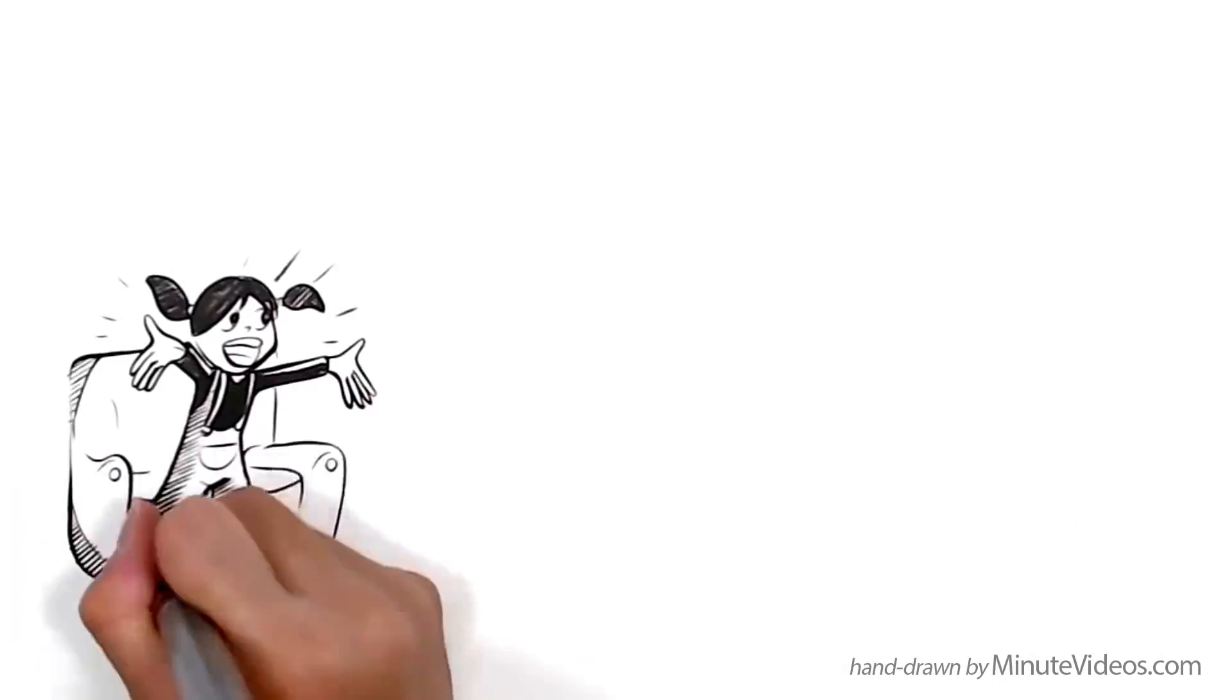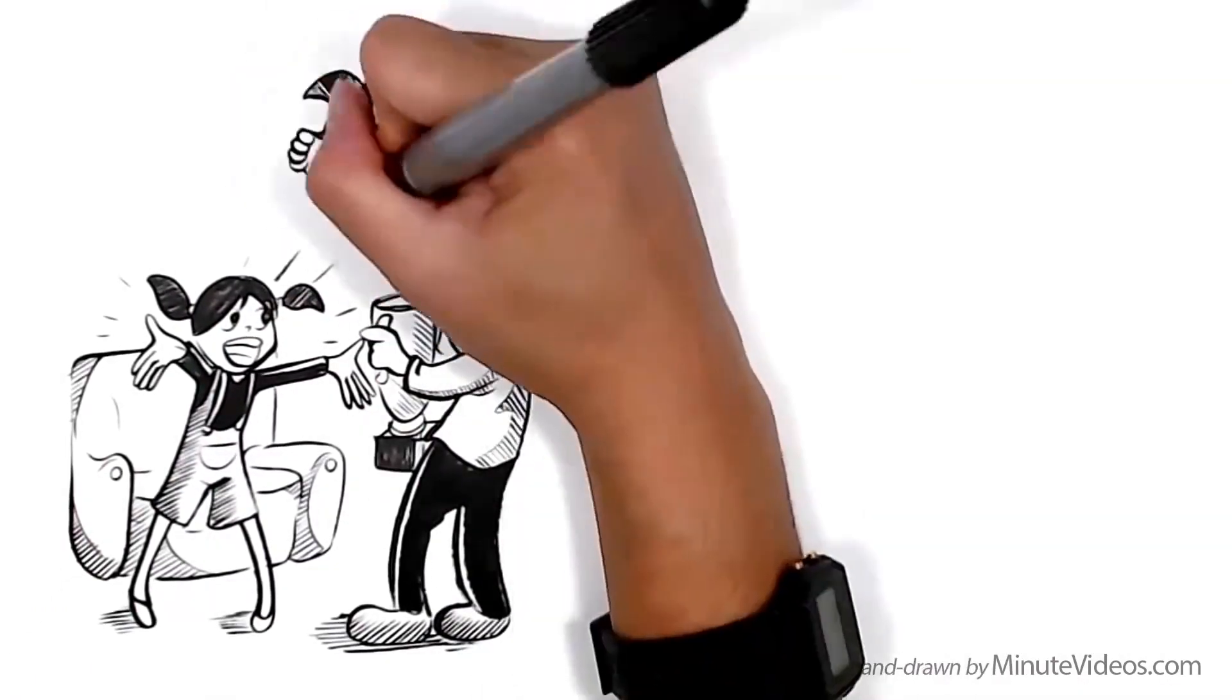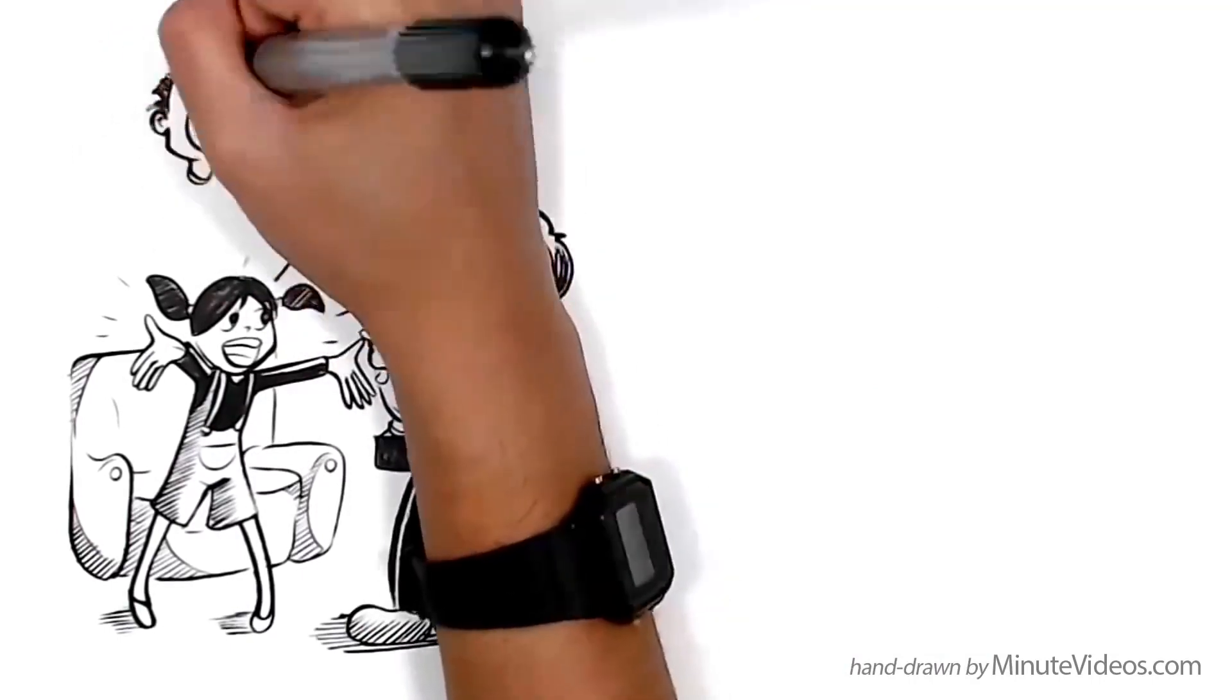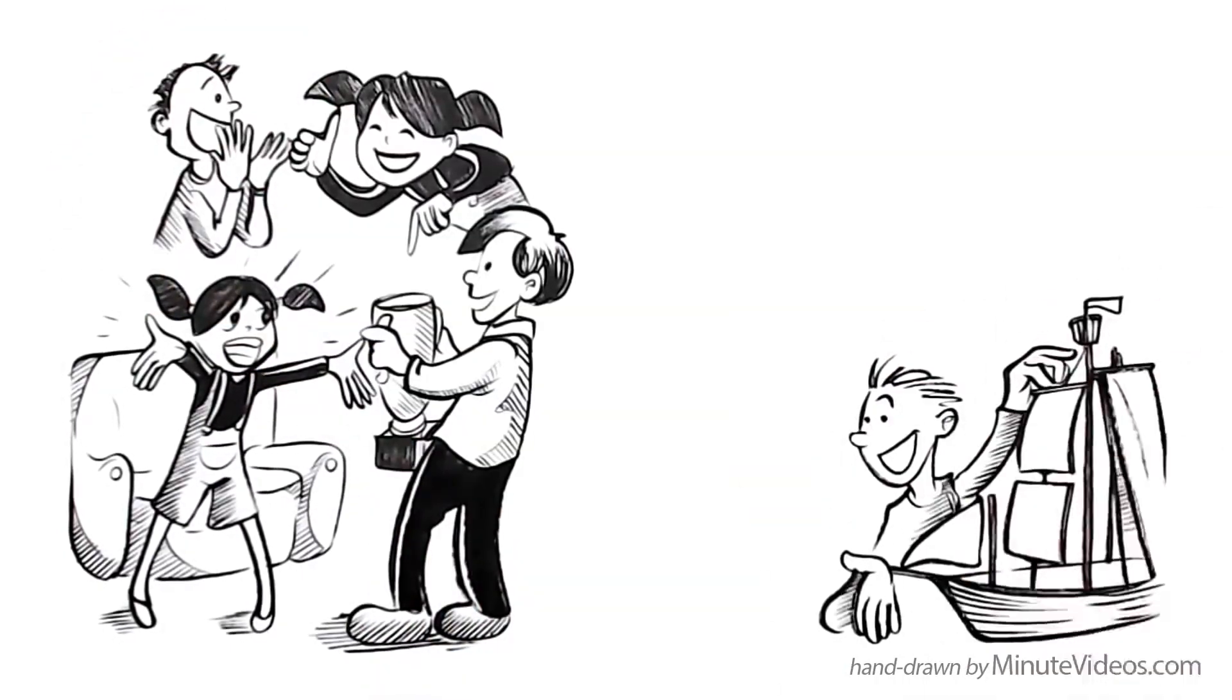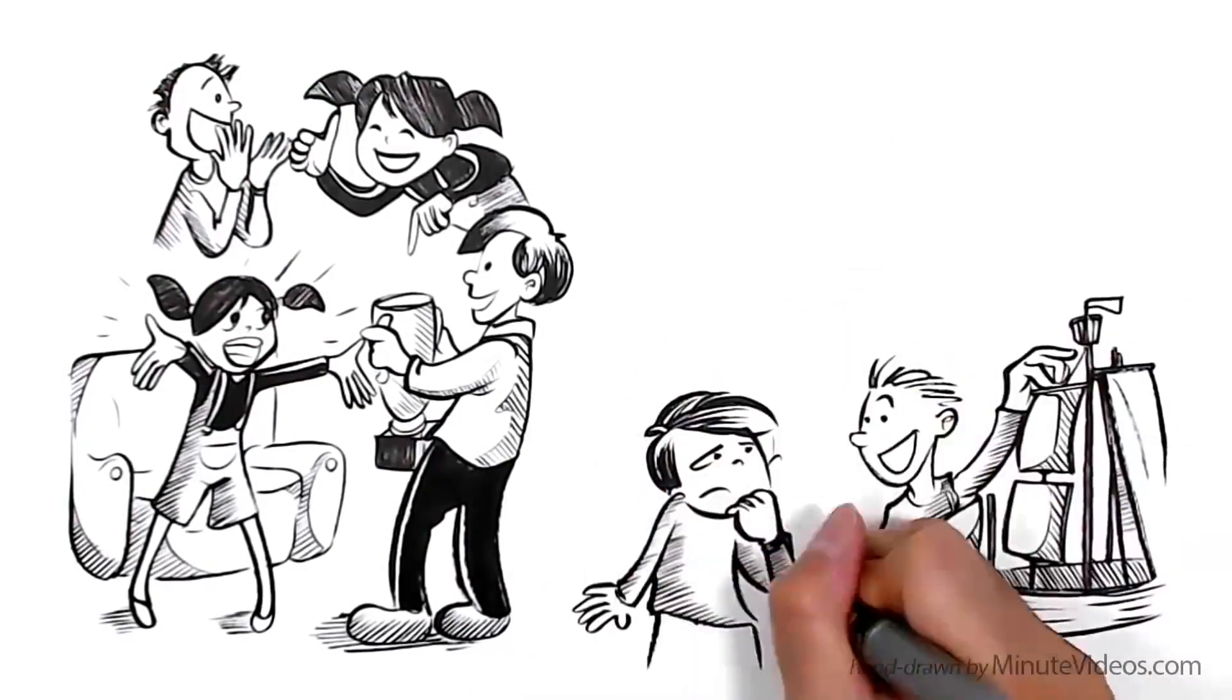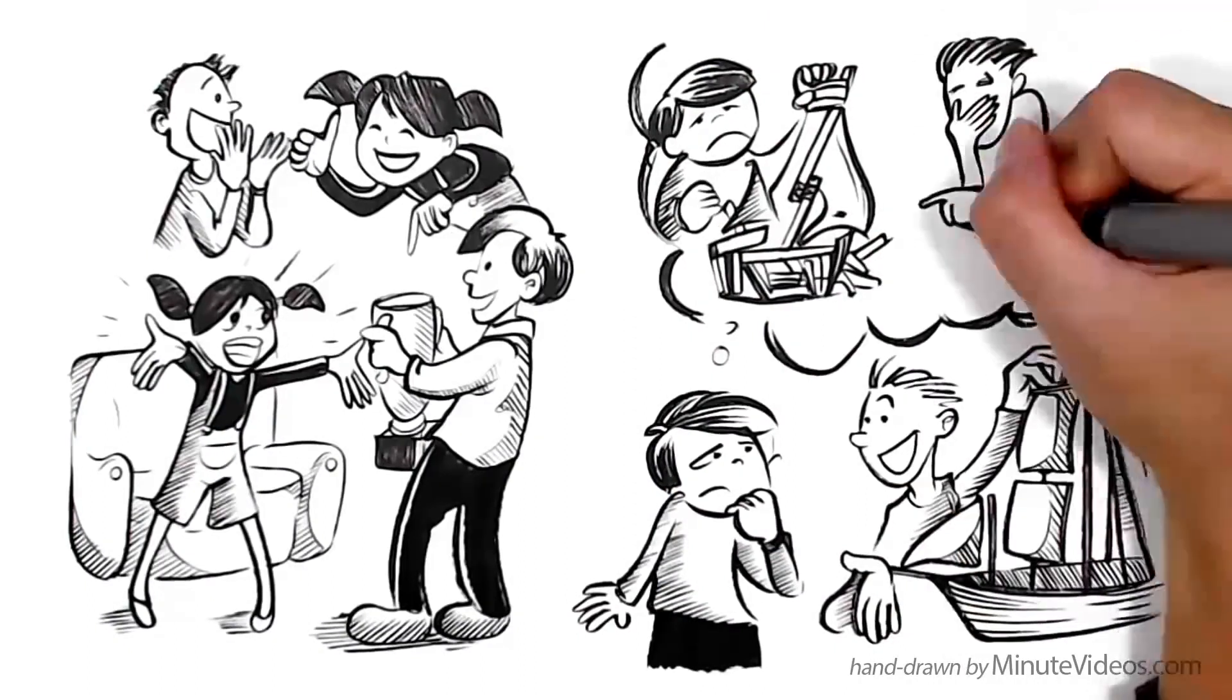Ann likes to see others succeed. It inspires her. She knows that if she motivates her friends to get better, she herself is likely to grow too. If his friends try new things and succeed, Jay feels threatened. He's afraid that their success will put pressure on him to do more with his life too.